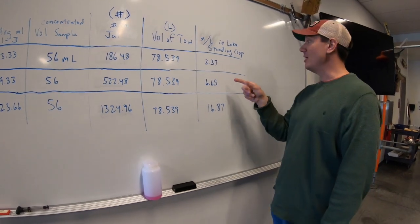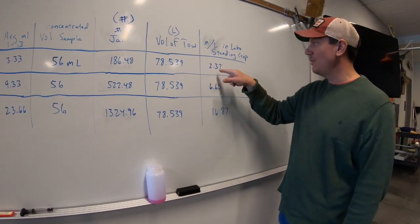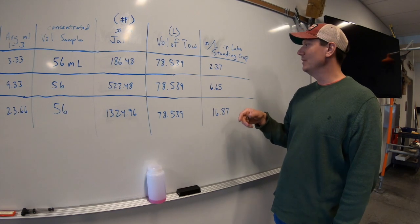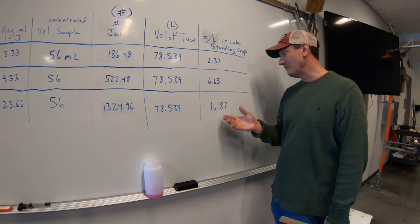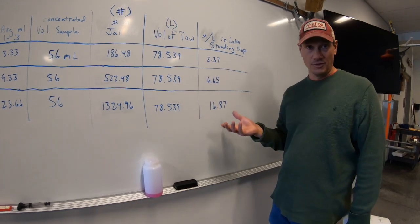...you would have 2.37 cladocerans, 6.65 copepods, and 17.89 rotifers.